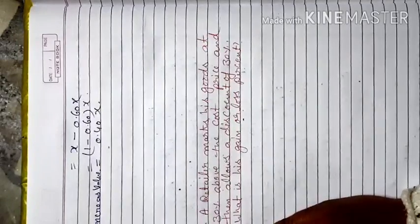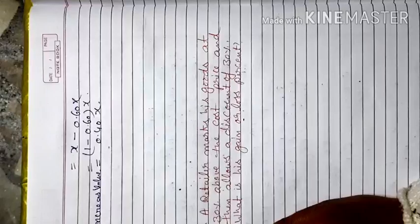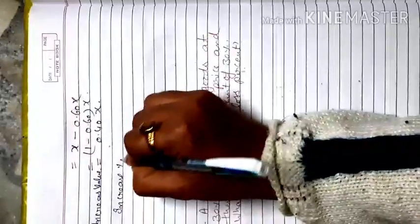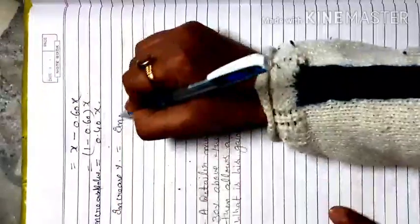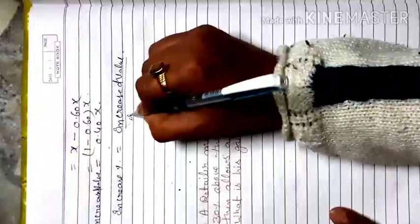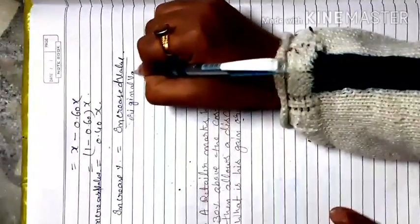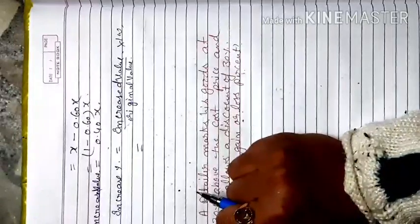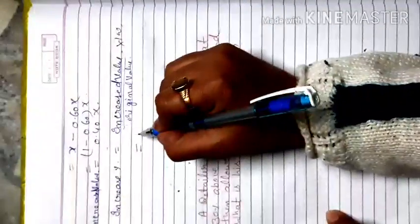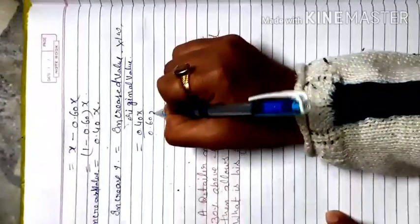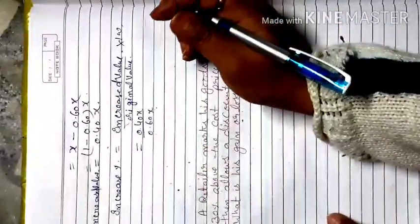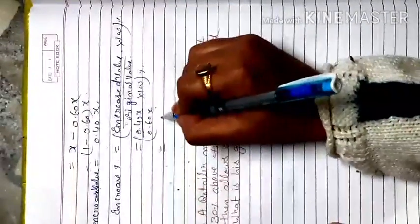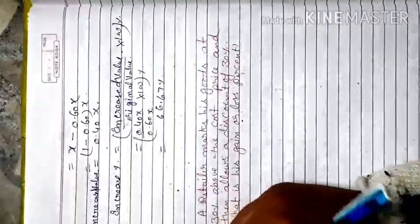Now we find the increase percent above the cost price. The formula is: Increase% = (Increased Value / Original Value) × 100. Here the original value is the cost price = 0.60x, and the increased value is 0.40x. So Increase% = (0.40x / 0.60x) × 100 = 66.67%. The mark price is 66.67% above the cost price.